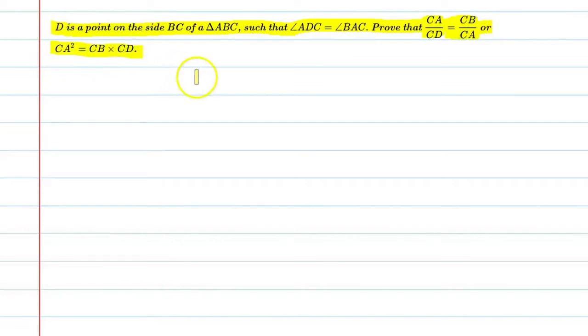Let's start the question. It says D is a point on which side? BC. A triangle ABC has a point D on BC side, such that angle ADC and BAC are equal. We need to prove this. Let's start.